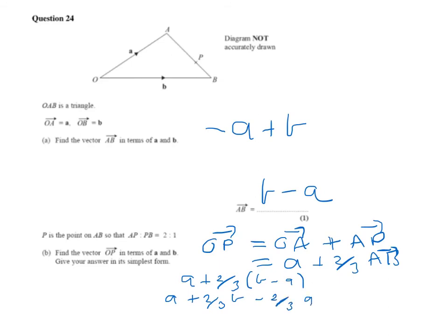So if we collect the A's, we've got A minus two-thirds A, which gives me one-third A, so it's one-third A plus two-thirds B.